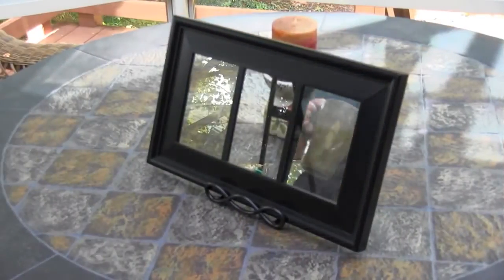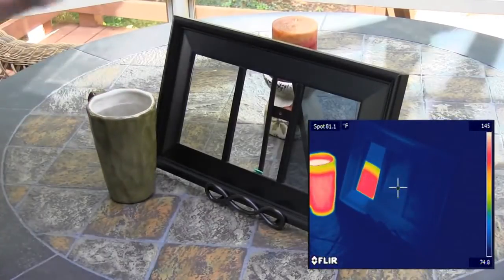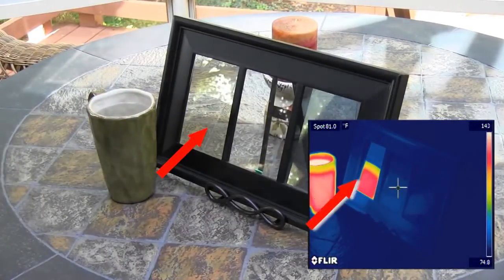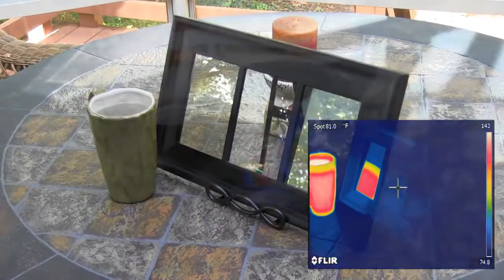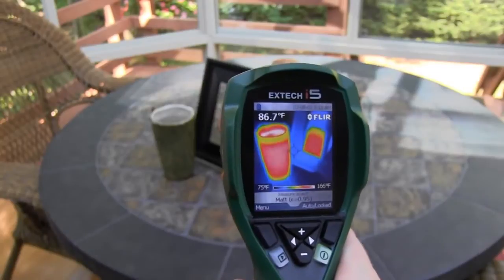Look at a hot cup of coffee with the thermal camera. Place the cup on a table in such a way that you can see it and its reflection in the Interlogic filmed window. The reflected energy is nearly as intense as that coming off the cup itself.